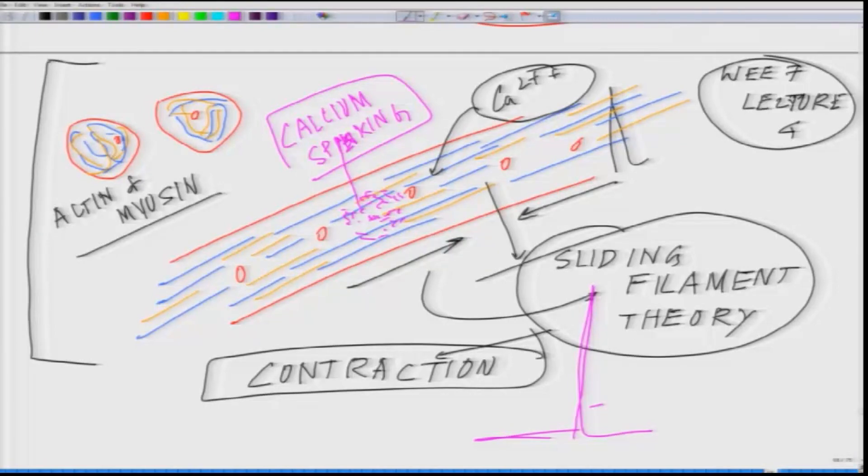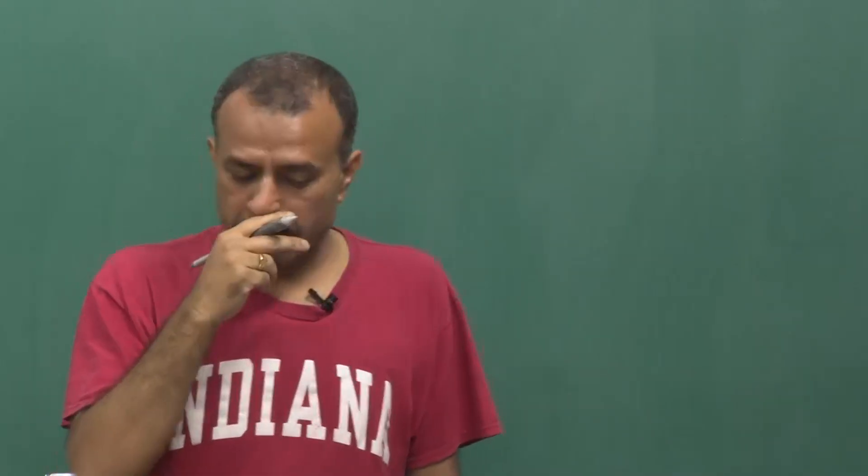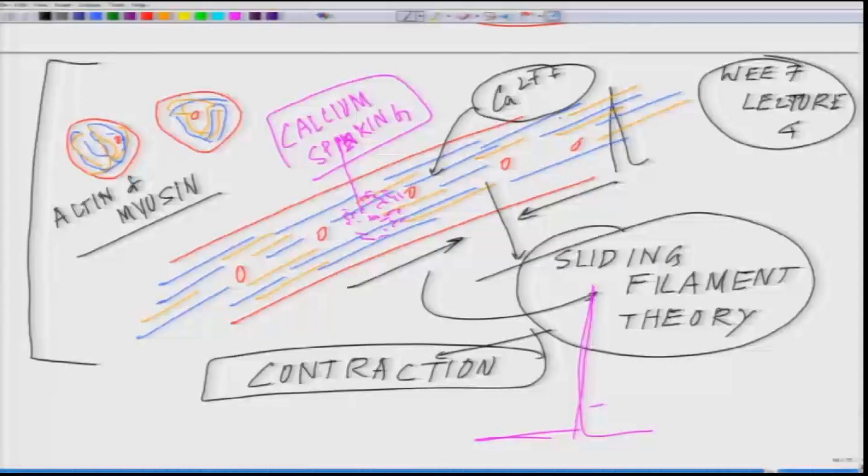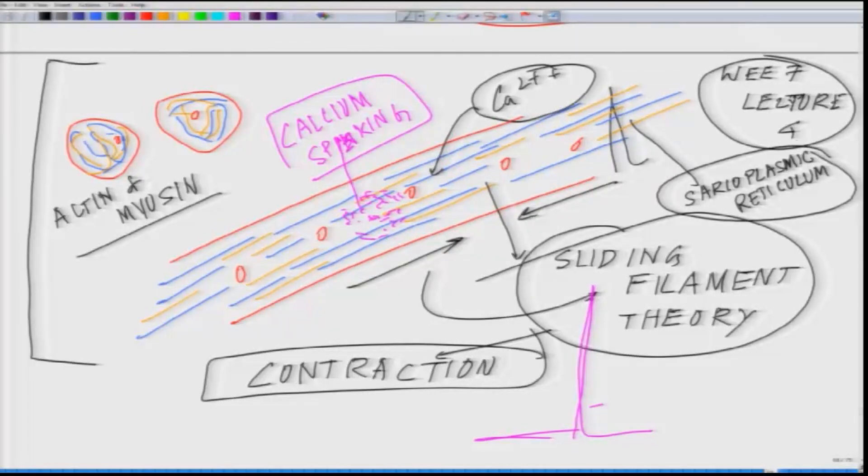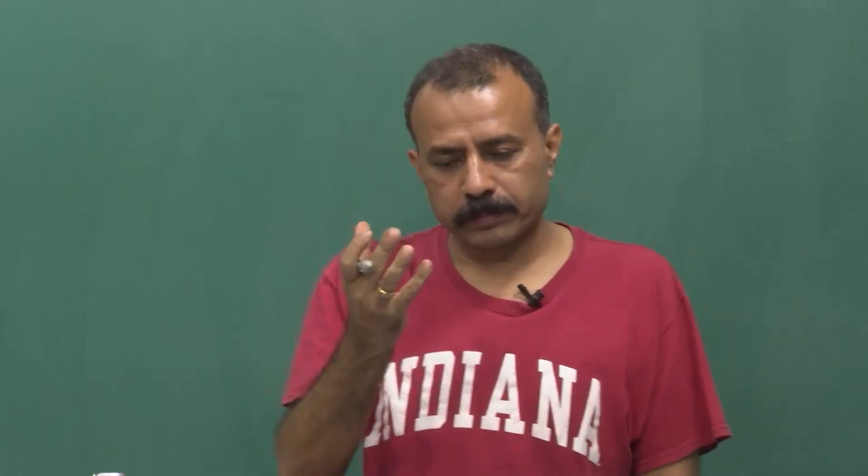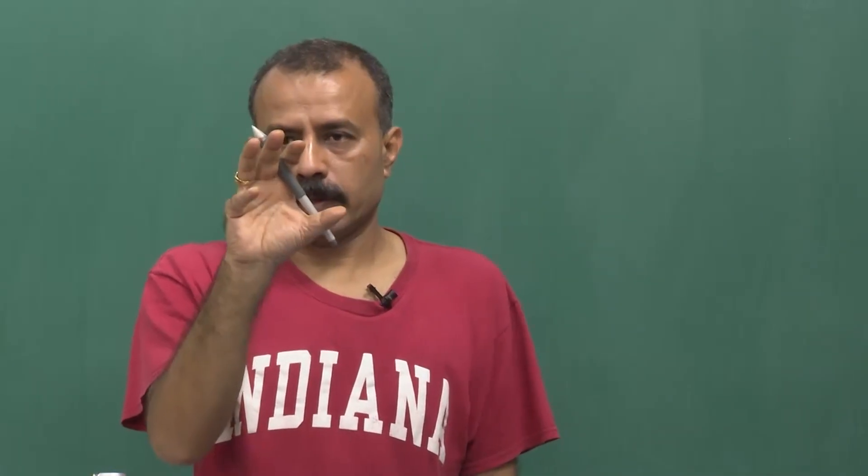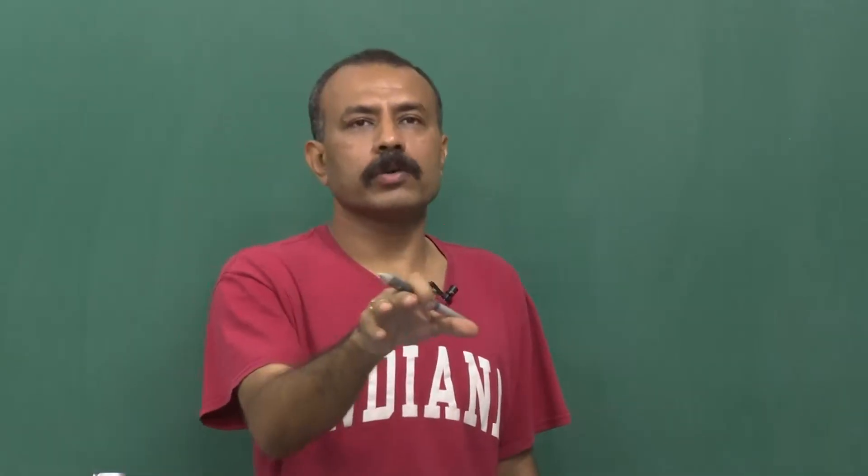Who controls the transient spike is a critical question. This transient spike is controlled by an organelle present in the myotubes, which is called sarcoplasmic reticulum. The sarcoplasmic reticulum is kind of a sponge - you squeeze it, the calcium will come out, and then it will pull it back.